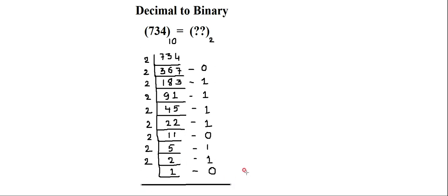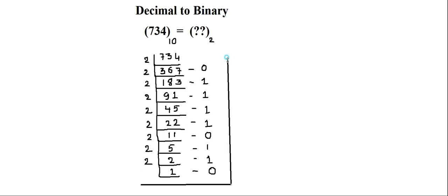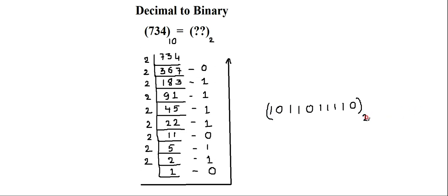To read the result, I start from the bottom and move up. The final binary equivalent is: 1, 0, then 1, 1, 0, then 1, 1, 1, 1, then 0. So the binary representation of 734 in decimal is 1011011110. I hope you have understood this process. If there are any doubts, please let me know in the comment section and I'll answer them. Thank you so much for watching — happy learning!